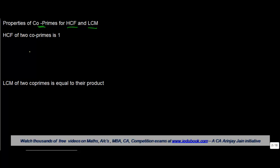So let's take two co-primes, let's take 4 and 5 for the purpose of this exercise. Now the property says that the HCF or the highest common factors of two co-primes is one.